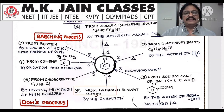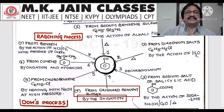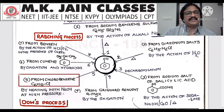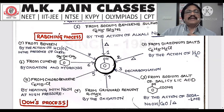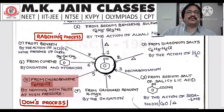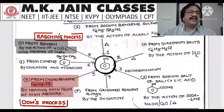Fourth: from Grignard reagent (RMgX — alkyl magnesium halide), by oxidation you will get phenol. Fifth: from chlorobenzene (C6H5Cl), by heating with NaOH at high pressure — this is called the Dow process. Sixth: from benzene, by the action of HCl and O2 in the presence of CuCl2, you will get phenol.